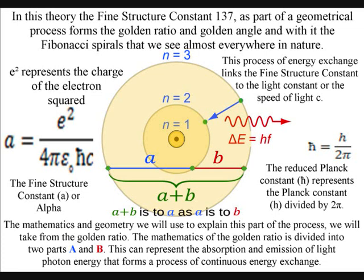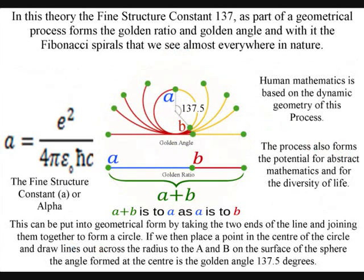The mathematics of the golden ratio is divided into two parts. This can represent the absorption and emission of light, photon energy that forms a process of continuous energy exchange. This can be put into geometrical form by taking the two ends of the line and joining them together to form a circle.